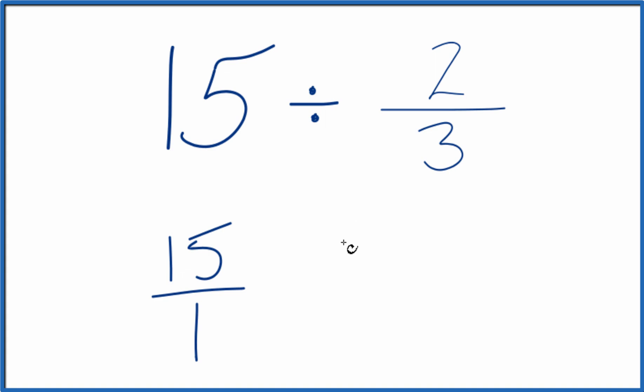And let's not divide, rather let's multiply by the reciprocal of 2 thirds. So to find the reciprocal for a fraction, you move the numerator down to the bottom, denominator goes to the top. So we have 3 over 2.